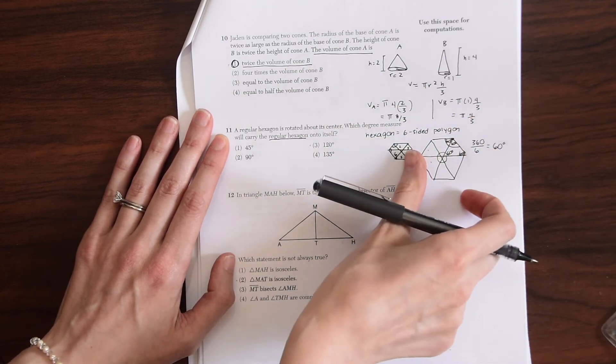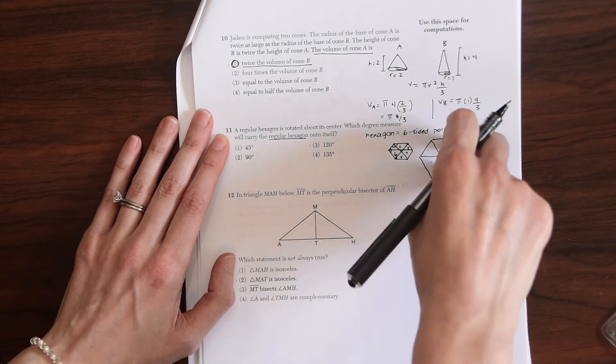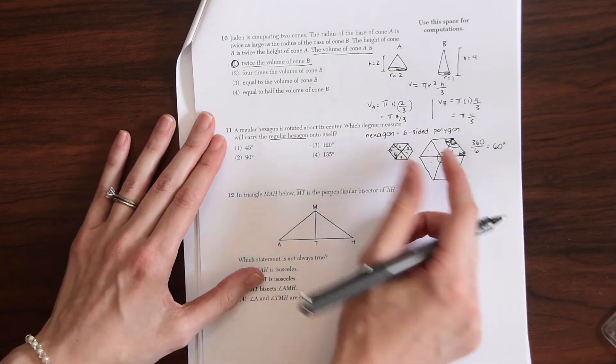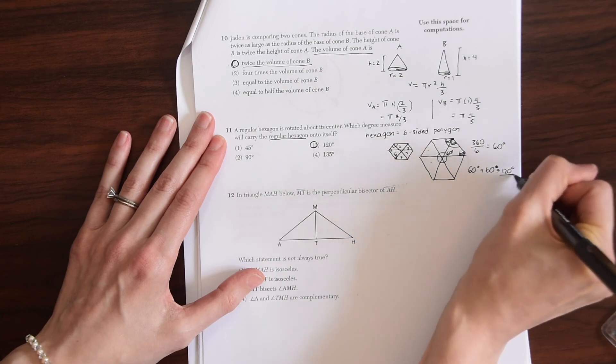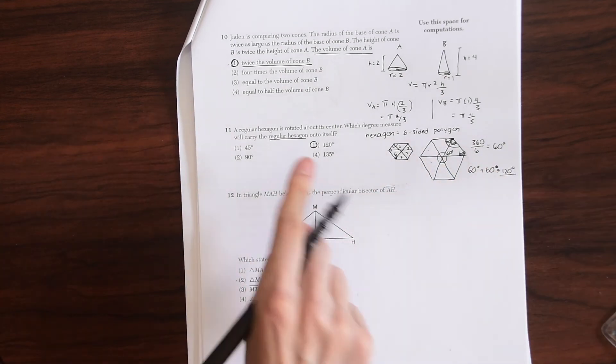So if we were to turn it, we would, for it to land onto itself again, we would have to turn it 120 degrees, which gives us our answer, which is choice three.